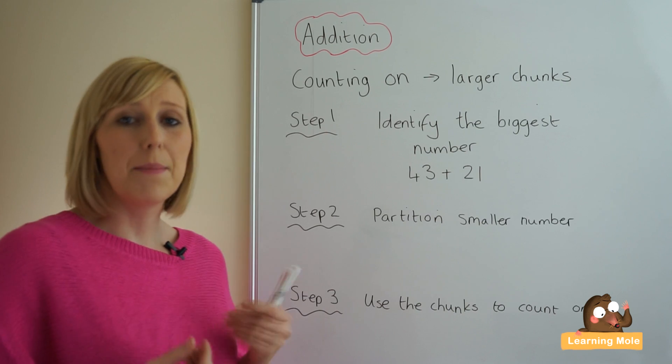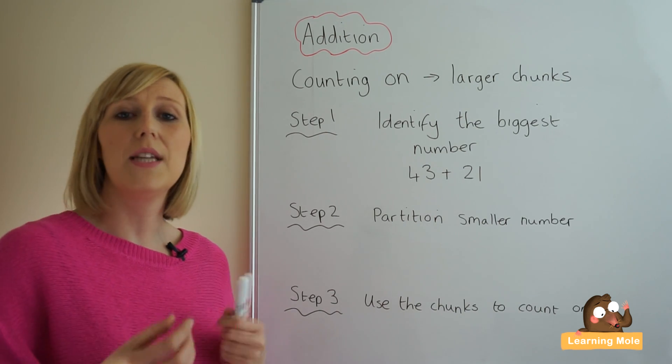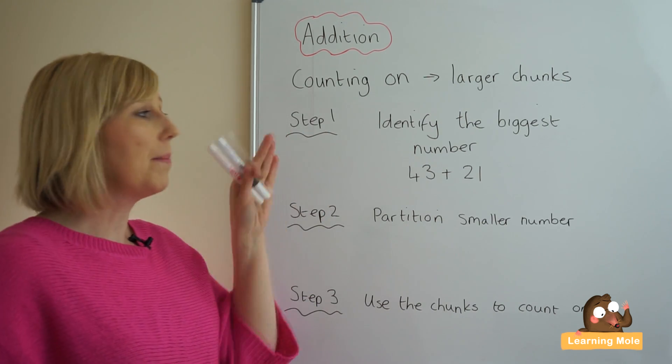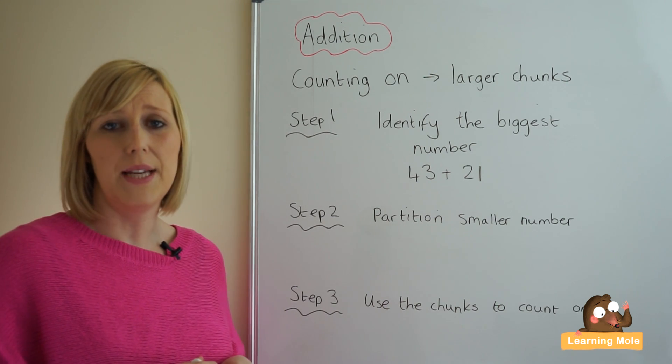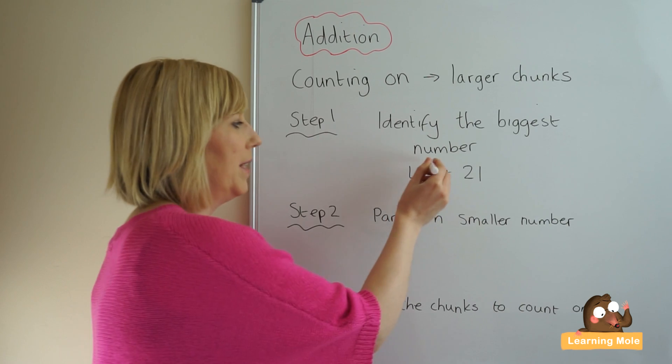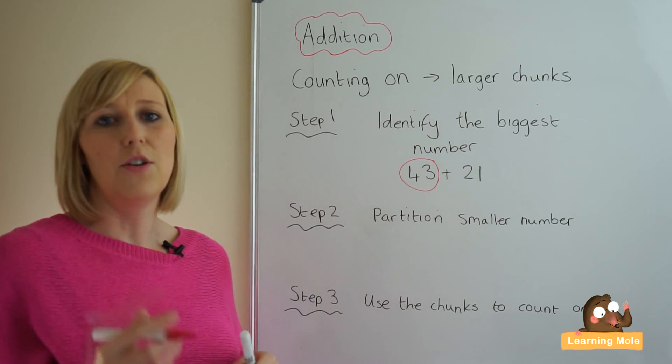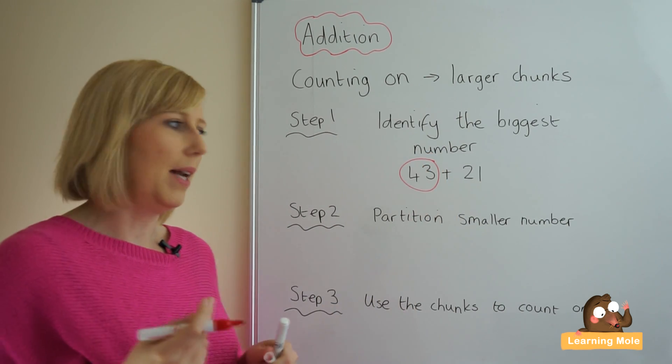So we just want to talk through the steps of this strategy, the counting on using the larger chunks. So step number one, identify the biggest number in your calculation or number sentence and in this case it's 43. That is the number that you're putting in your head or on your blank number line.